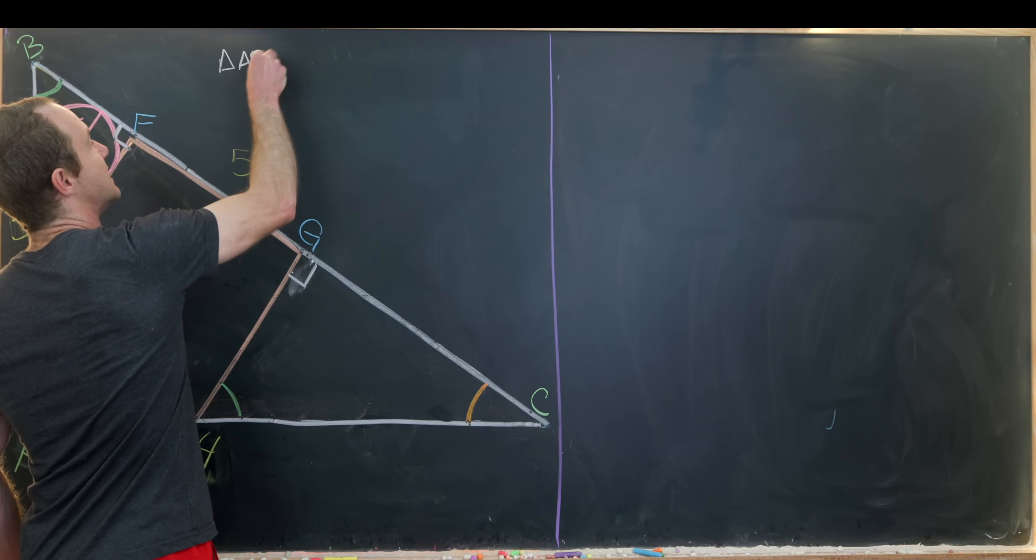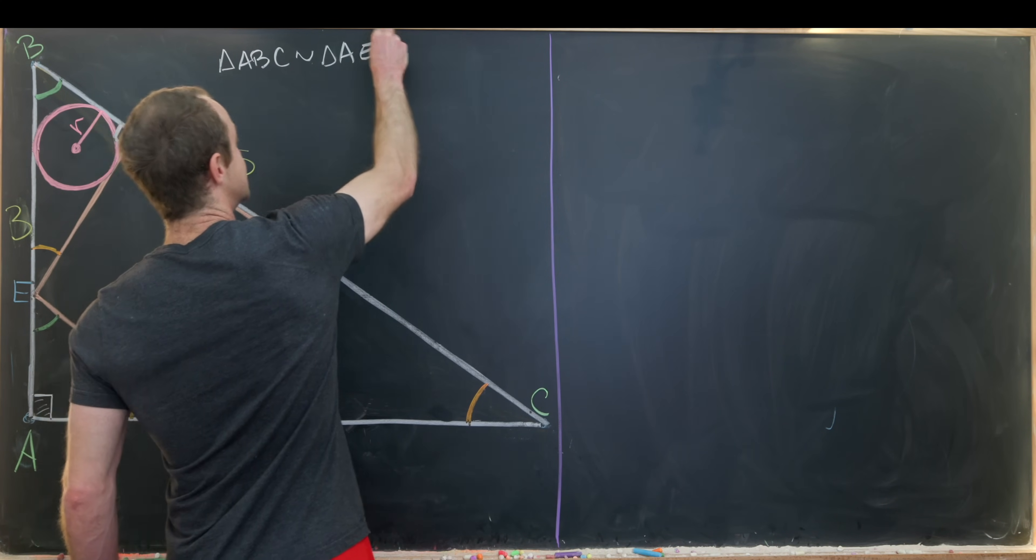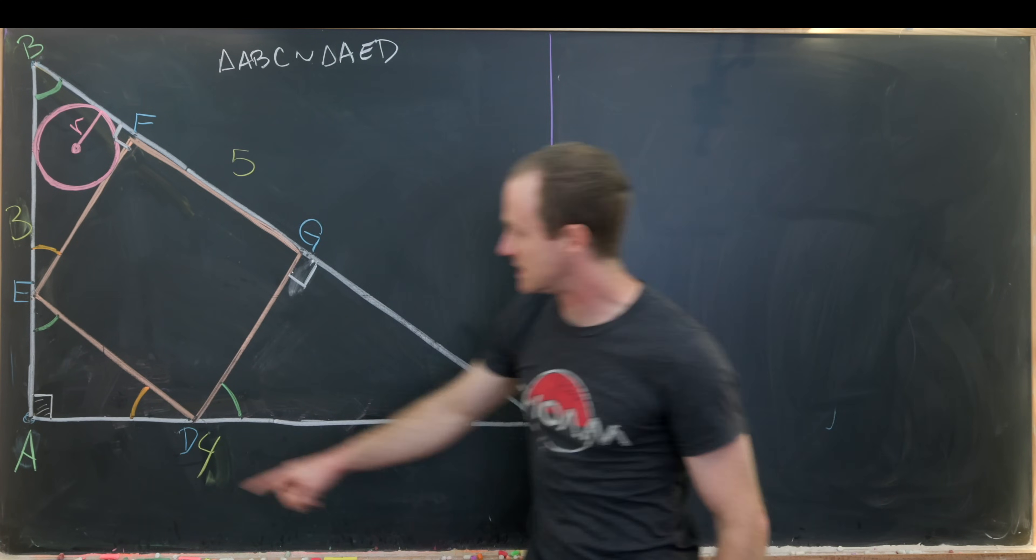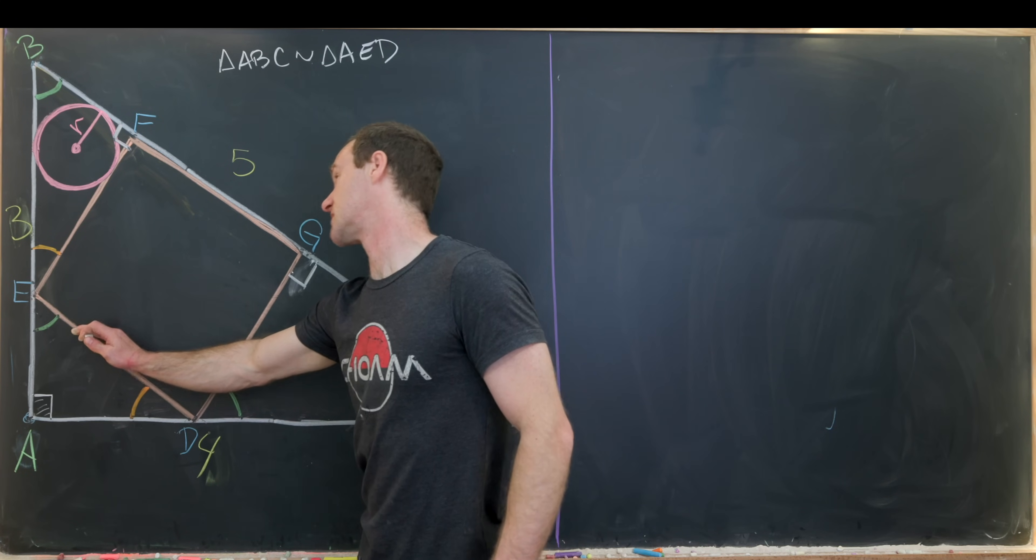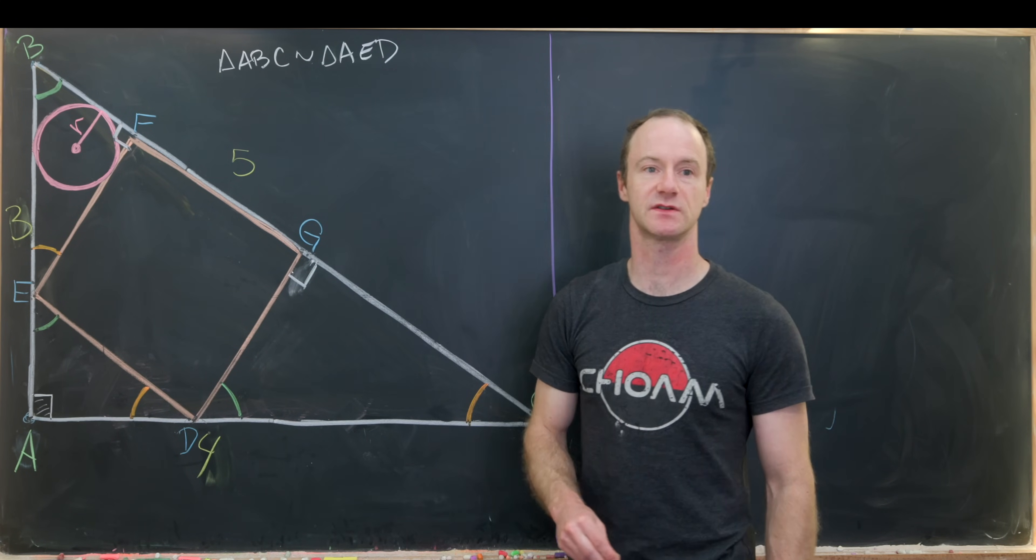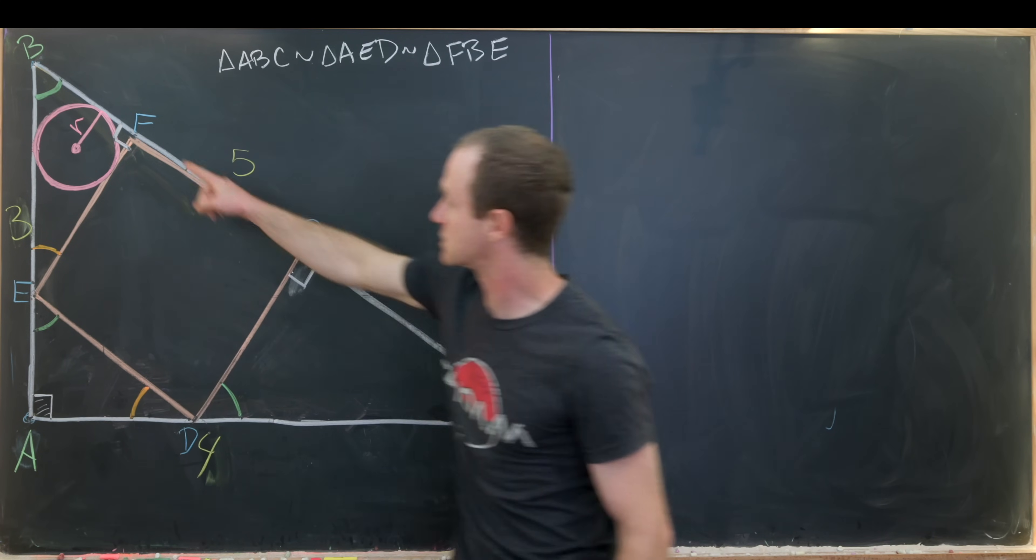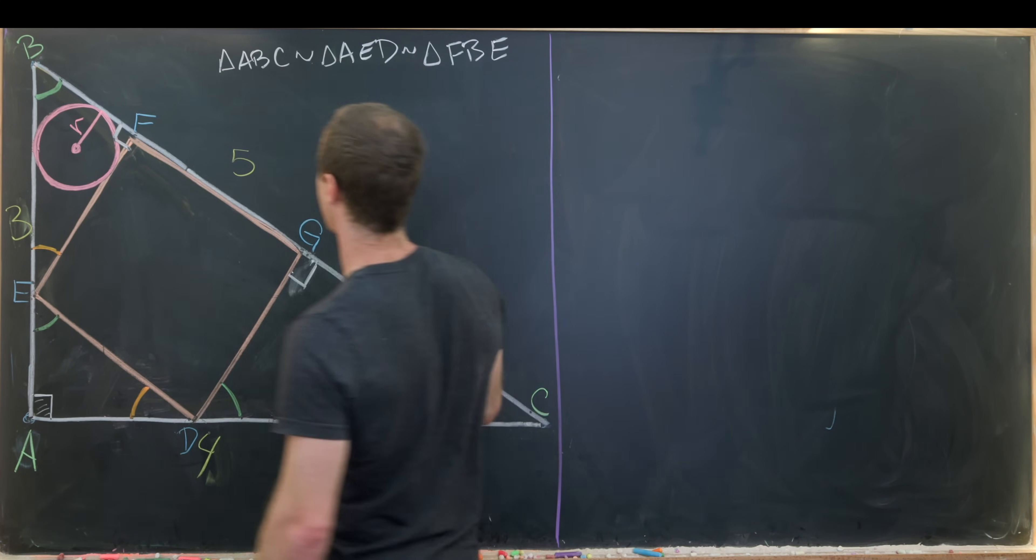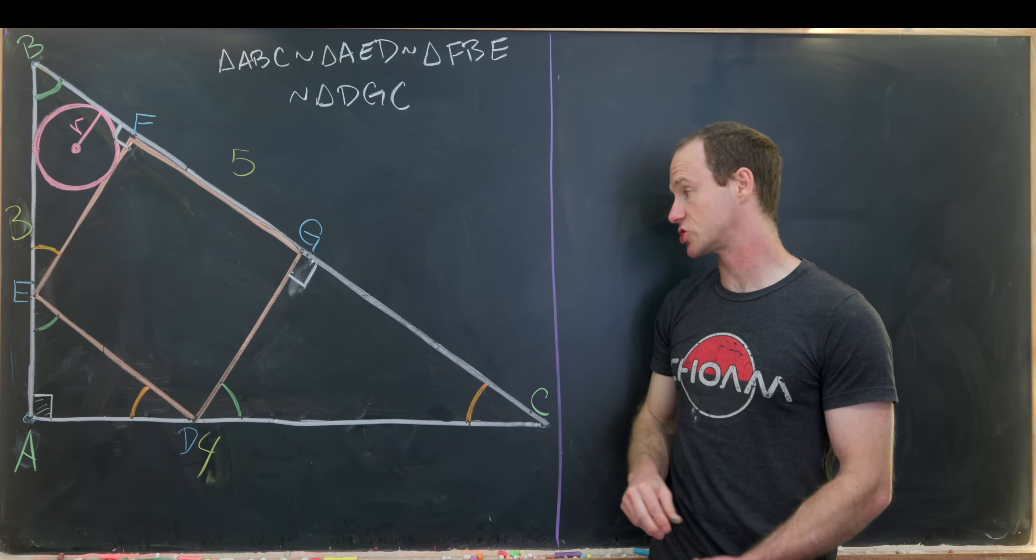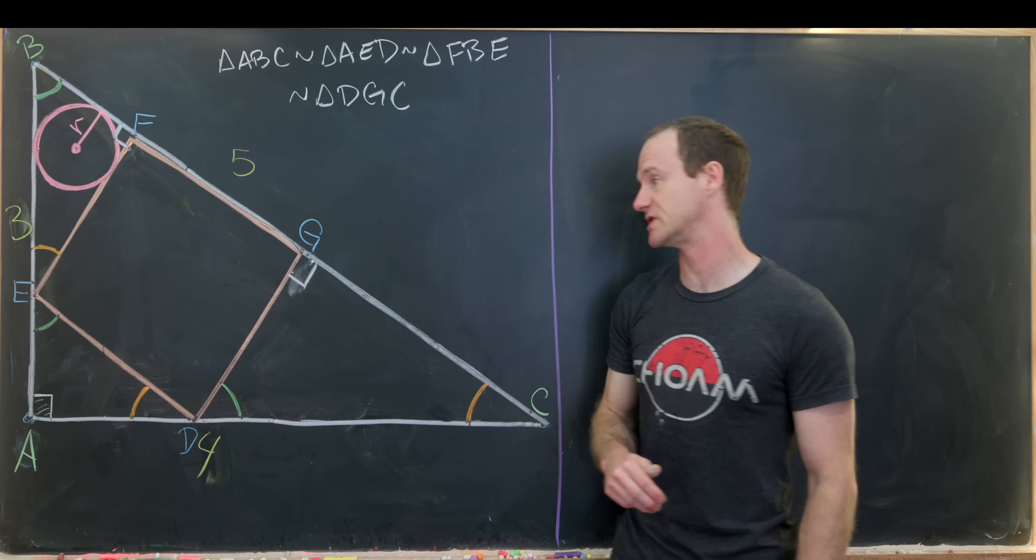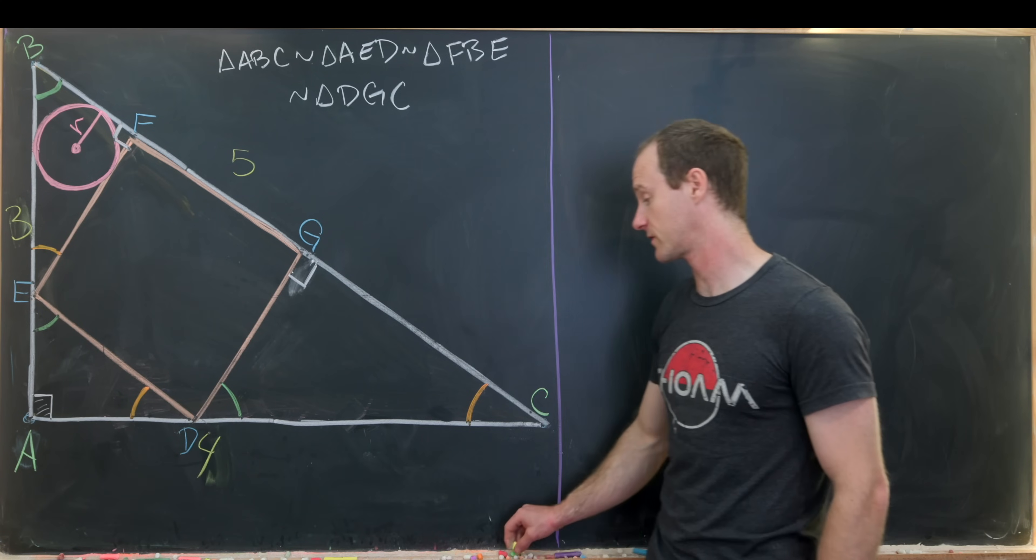Notice we have triangle ABC, the large one, is similar to triangle AED, the small one down here. That's maybe the one that's most obviously similar because this line right here which makes the hypotenuse is parallel to the hypotenuse. And that's also similar to triangle FBE, the one up here in the corner. And finally, we have one more down here, triangle DGC. But now since we have all of these similar triangles, that means we can make arguments about proportions of side lengths. But in order to do that, we probably need to start labeling some side lengths.